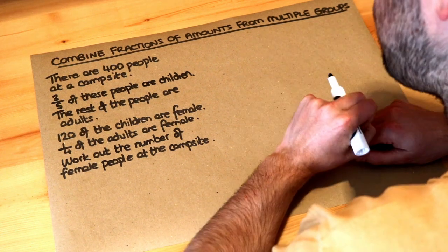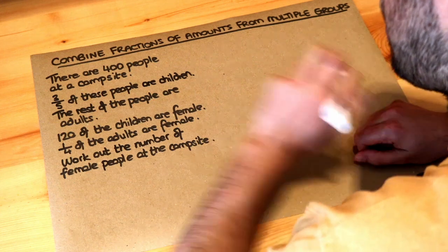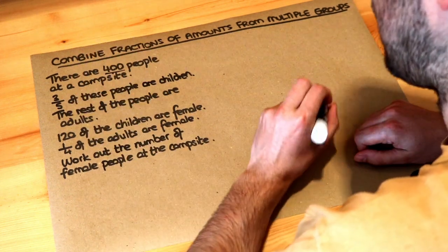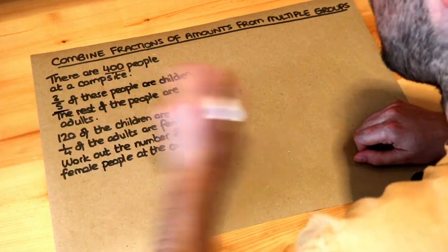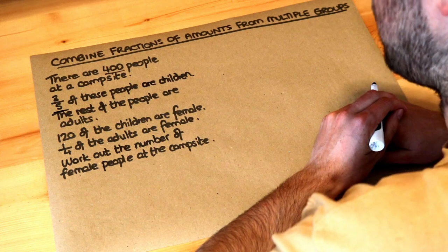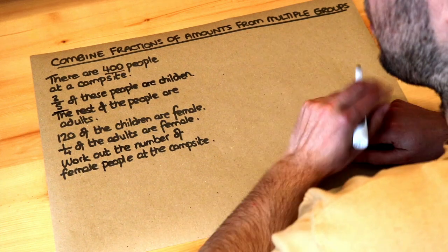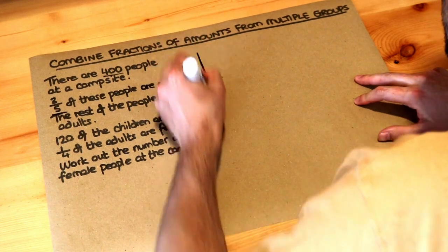There's lots of information here but let's just deal with it one bit at a time. We've got 400 people at the campsite and we're also told that three-fifths of those people are children. So we might think it might make sense to work out the number of children that we have. So let's work that out.